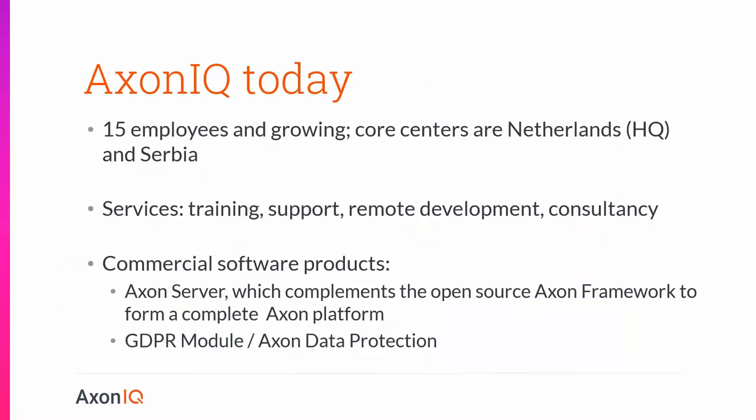Looking at where we are today — we're not Elastic yet. We are about 15 employees and growing rapidly. Our headquarters are in the Netherlands, and we also have a sizable department in Serbia, growing rapidly to provide consulting services. What we sell is basically two things: services including training, support, consultancy, and remote development; and commercial software. Axon Framework itself is open source, but we sell add-ons including Axon Server and a GDPR module for encryption.